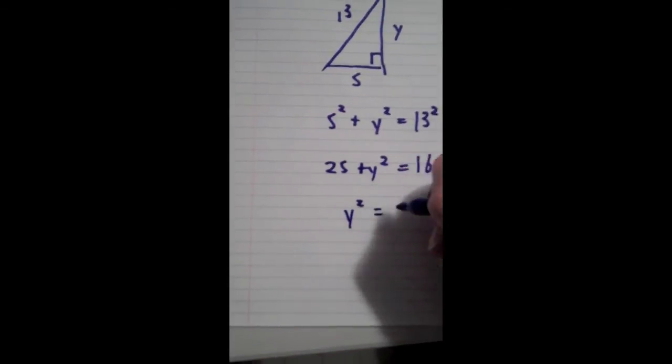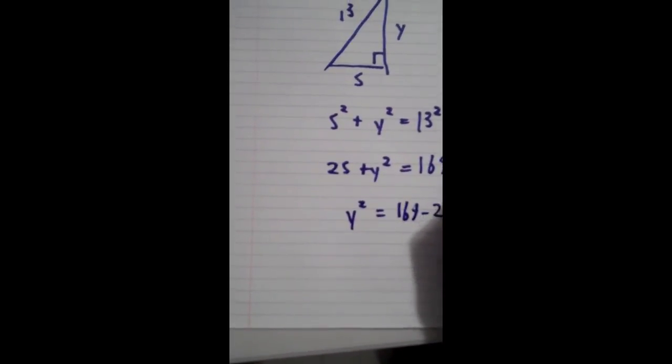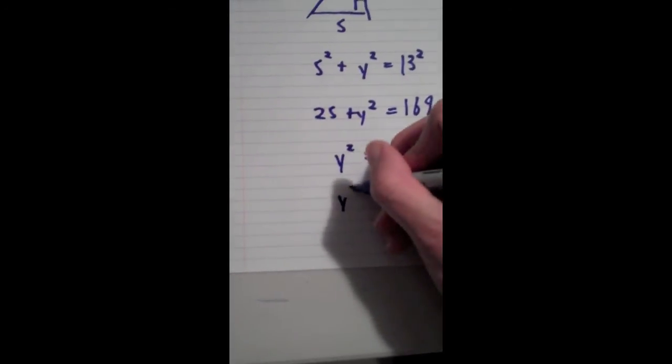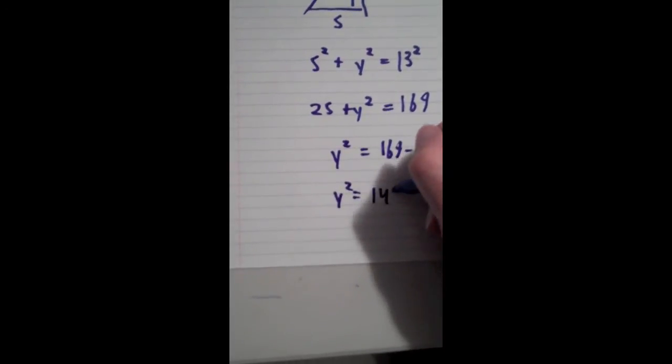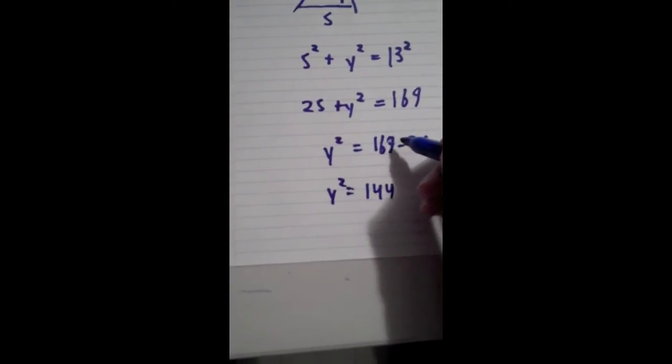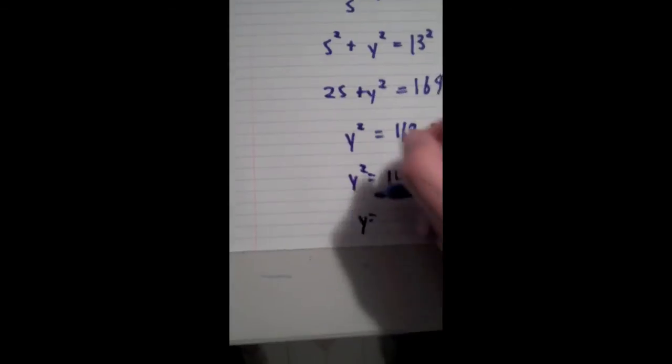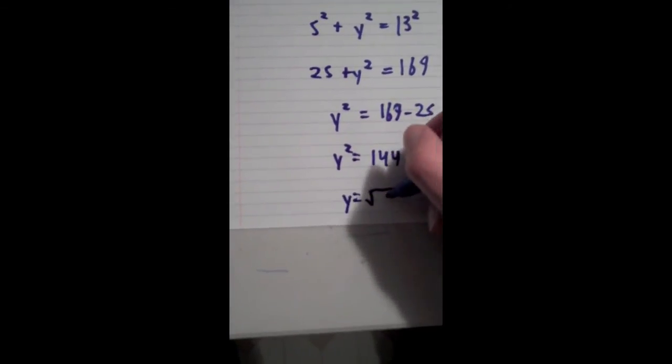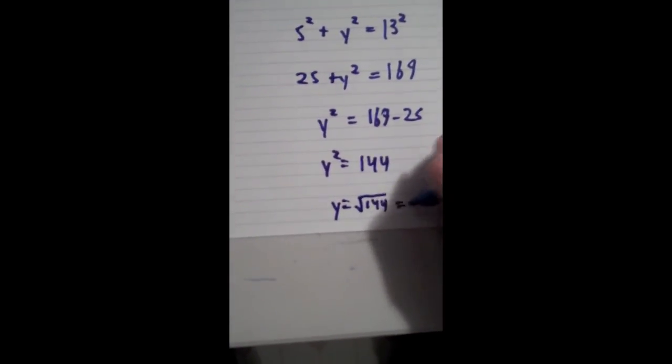y squared equals 169 minus 25. I tend to be pretty careful in doing my algebra to write out my steps one at a time because I hate when I make a stupid mistake and I get something wrong.